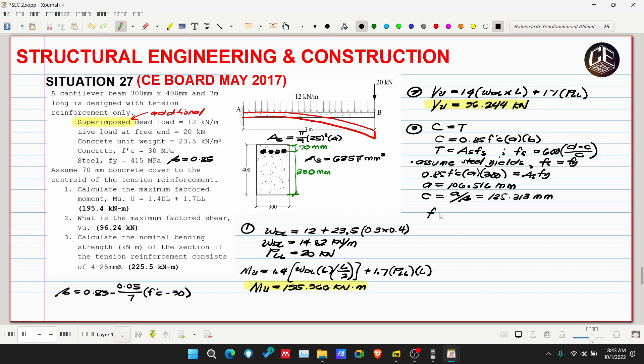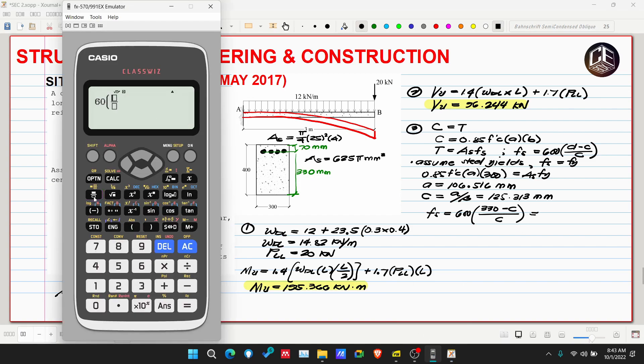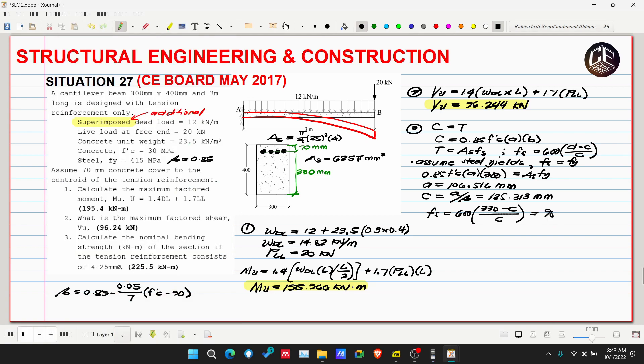Now we can check Fs if it exceeded Fy or is less than Fy. So Fs is 600 multiplied by D which is 330 minus C over C, where C is 125.313. So 980.04 megapascals. We exceeded Fy, so our steel yielded. This means our Fs is equivalent to Fy. This also means we got the correct A and the correct C.